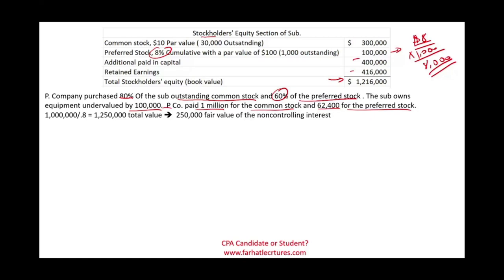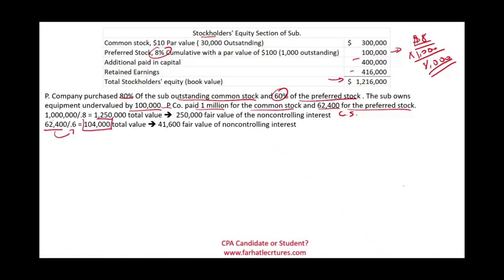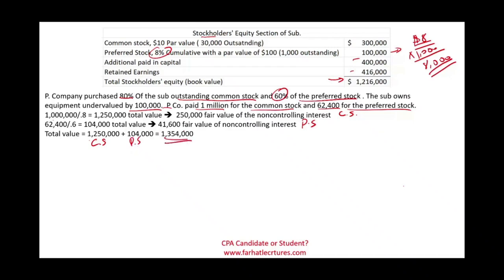To determine the non-controlling interest, first find the total value for common stock: $1,000,000 paid ÷ 80% = $1,250,000 total value. Of this, $1,000,000 was paid for 80%, so $250,000 is the fair value of the NCI common stock. Then do the same for preferred: $62,400 ÷ 60% = $104,000 total preferred value. The remaining 40% equals $41,600 as the fair value of NCI preferred stock. Total value for the whole company is $1,250,000 + $104,000 = $1,354,000.